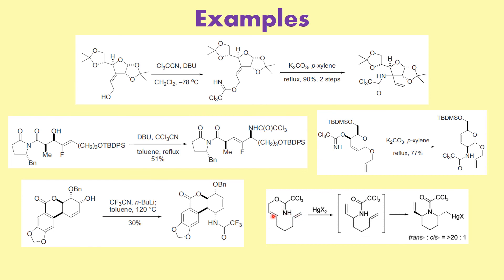This is the Overman rearrangement. The allylic alcohol gives you this intermediate, and you get a trans product with trans-to-cis selectivity. Here you can react with sodium hydride to give the desired product. Always remember this type of question and keep that particular mechanism in mind.